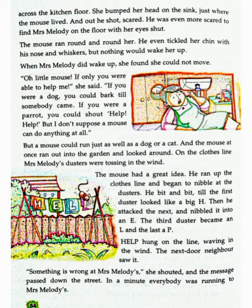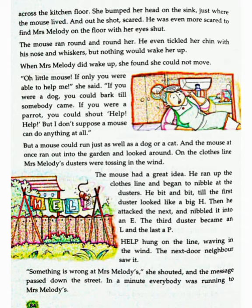He bit and bit till the first duster looked like a big H. Vahe thoda thoda kutarta gaya jab tak ki pehle duster par H nahi ban gaya. Then he attacked the next and nibbled E. Tab usne agle par akraman kiya aur uspar E banaya. The third duster became L and the last P. Tisre par L banaya aur chauthe par P. Help hung on the line waving in the wind. Help rassi par jhool raha tha aur hawa mein hil raha tha.